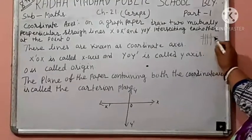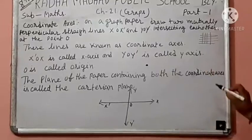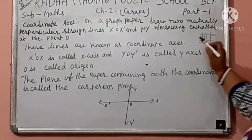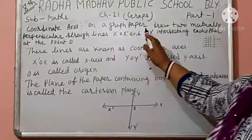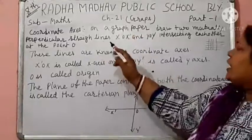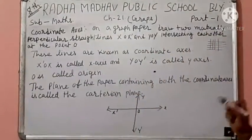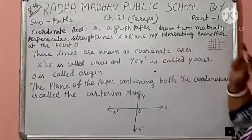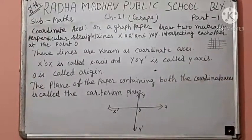Slanting horizontal and perpendicular lines, mutually perpendicular straight lines. On a graph paper, draw two mutually perpendicular straight lines X O X dash and Y O Y dash intersecting each other at the point O.